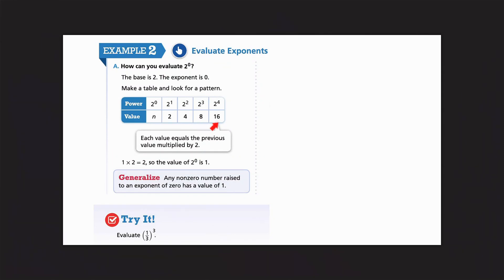So, that's true, right? 8 multiplied by 2 is 16. 4 multiplied by 2 is 8. 2 multiplied by 2 is 4. So, that must mean, what would this have to be multiplied by to make 2? n would have to be 1. So, because of that, we know that any number to the 0 power equals 1.